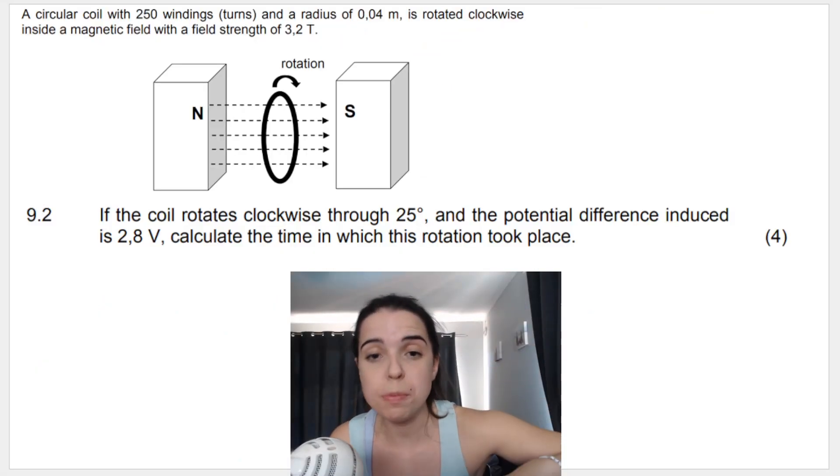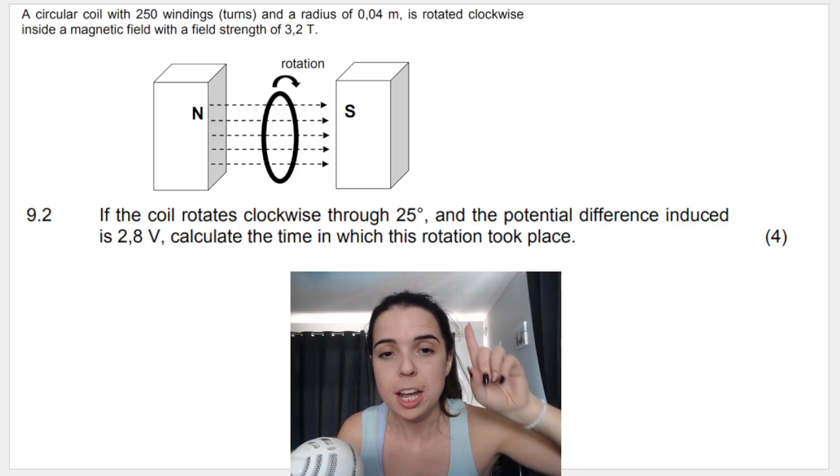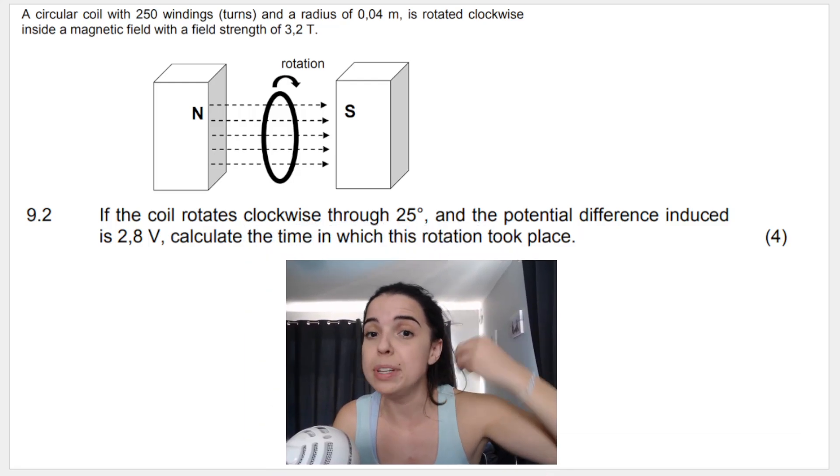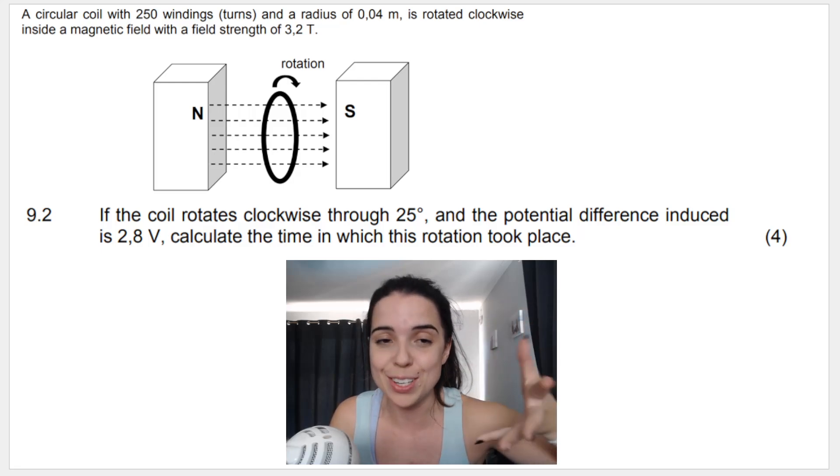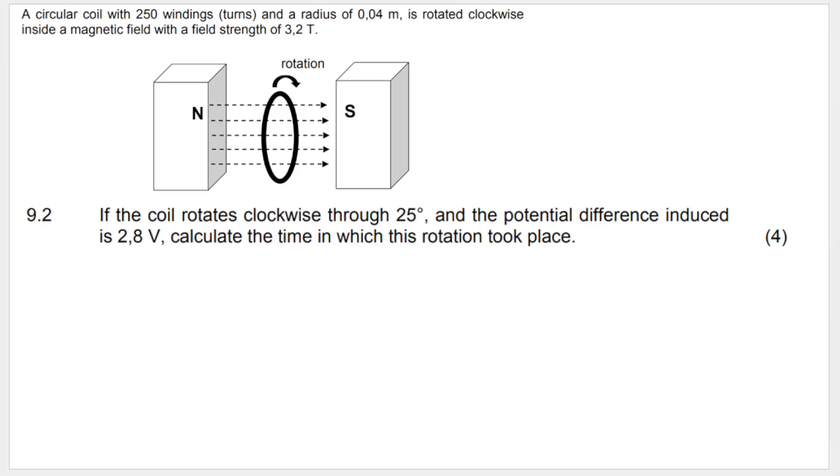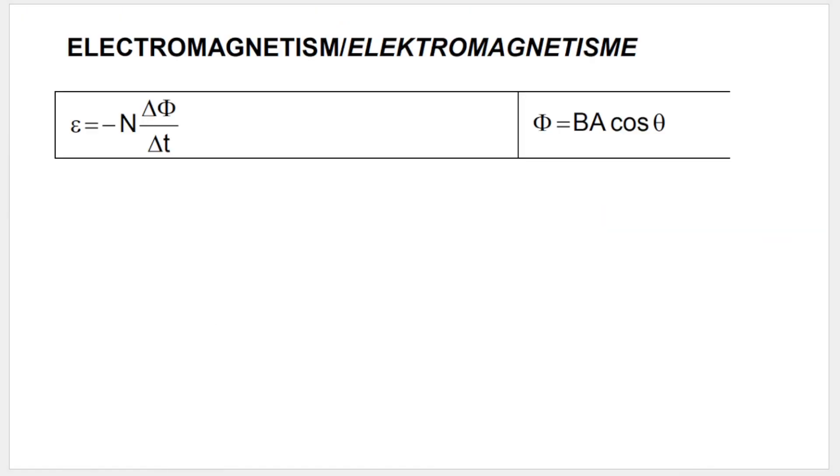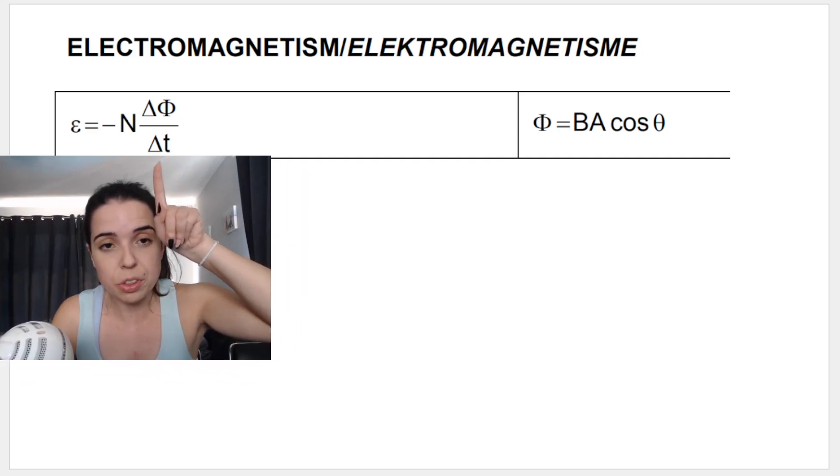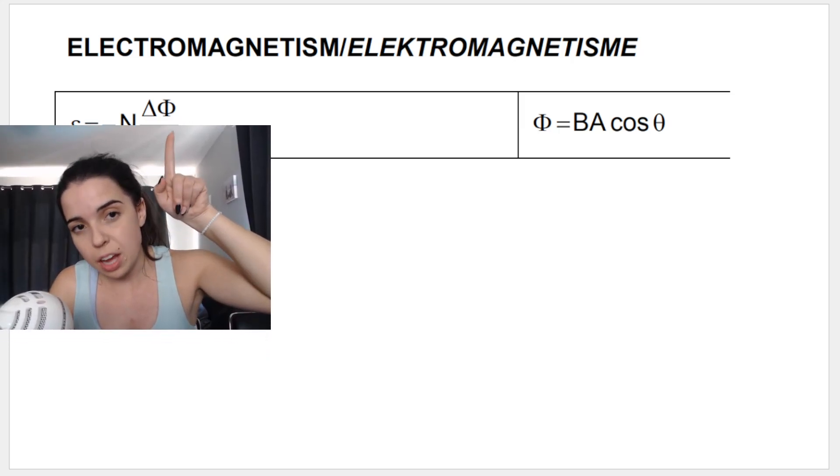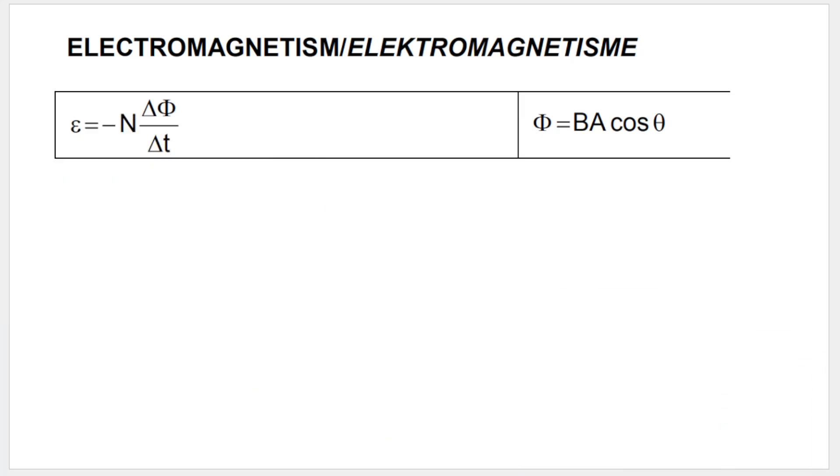My next question, 9.2, leads on from the previous question. If the coil rotates clockwise through 25 degrees and the potential difference induced (or EMF induced) is 2.8 volts, calculate the time in which this rotation took place. I hope you're thinking of the correct formula: ε = -N(Δφ/Δt). We're looking for time. We have the induced EMF, we have N, and we need to work out change in magnetic flux.